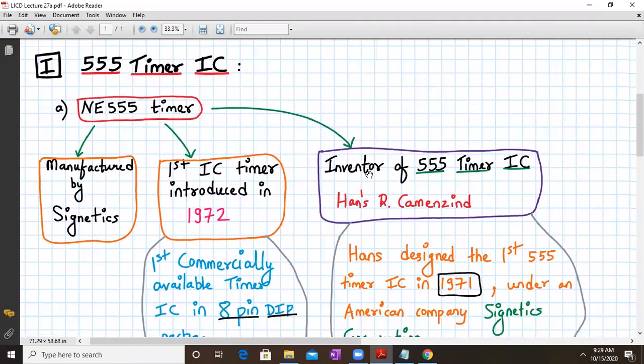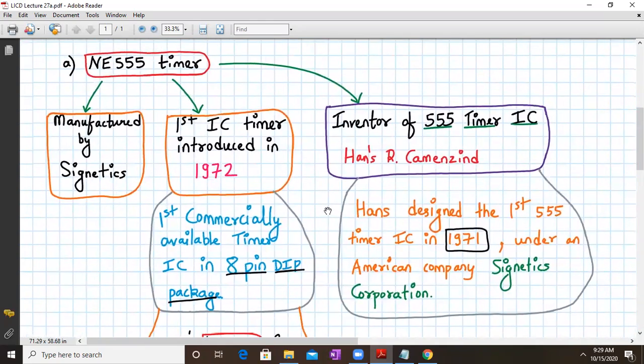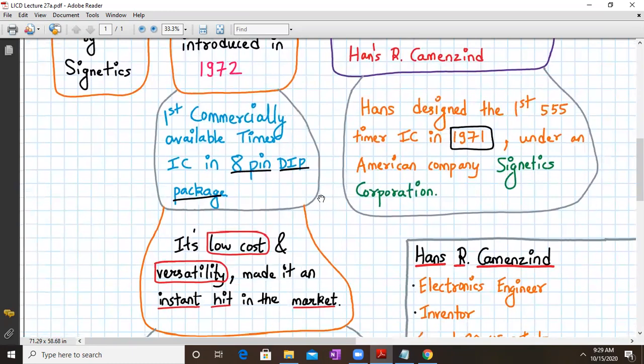So the 555 timer IC, first of all, it was manufactured by Signetix and it was called as NE555 timer. The first IC timer was introduced in 1972. That is the first commercially available timer in an 8 pin dual inline package. Its low cost and versatility made it an instant hit in the market.